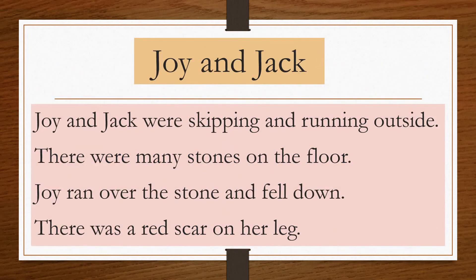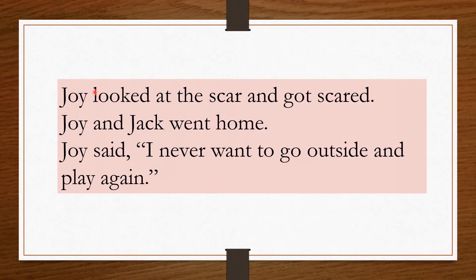We saw the story with pictures — now let's read the story once. Joy and Jack were skipping and running outside. There were many stones on the floor. Joy ran over the stone and fell down. There was a red scar on her leg. Joy looked at the scar and got scared. Joy and Jack went home. Joy said, 'I never want to go outside and play again.'